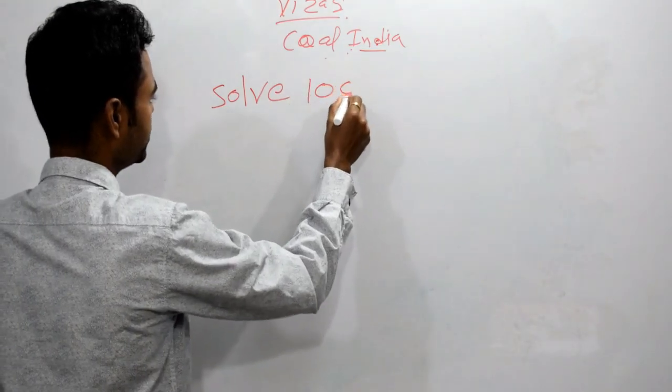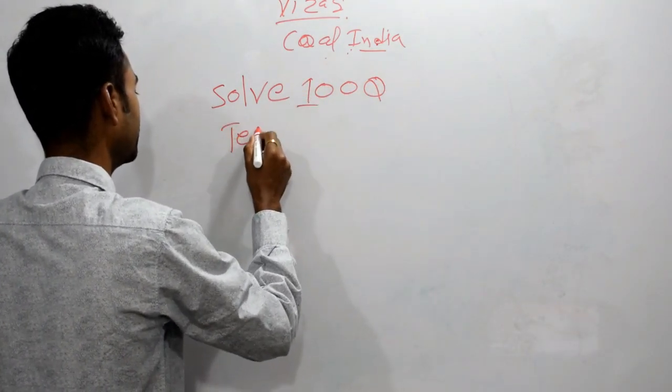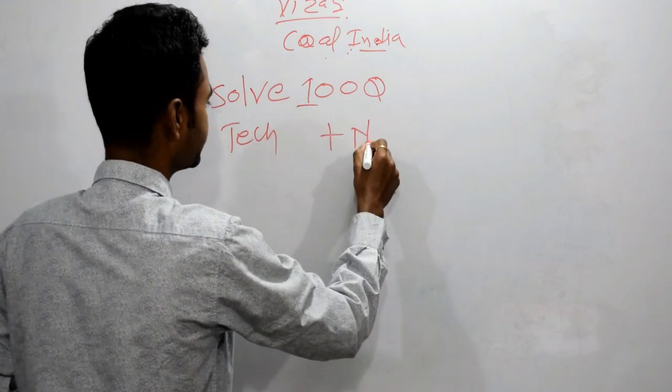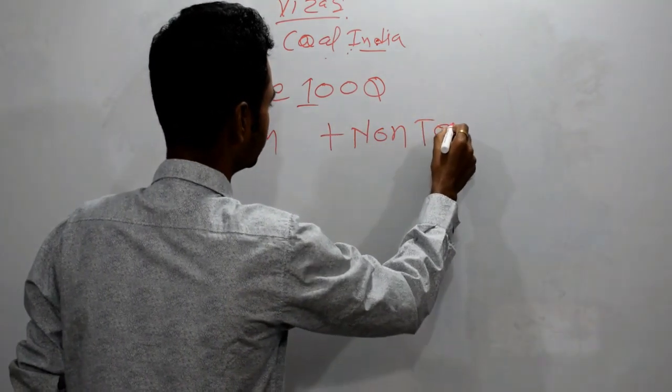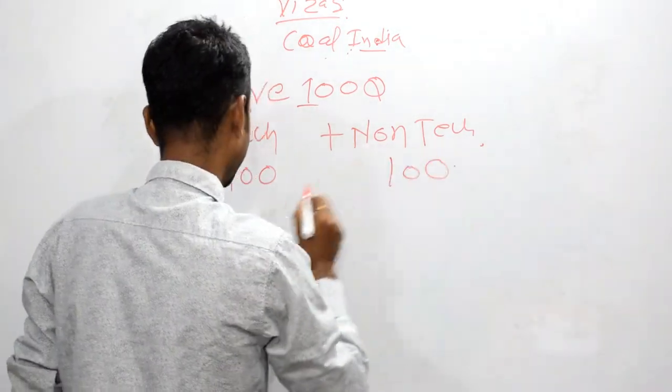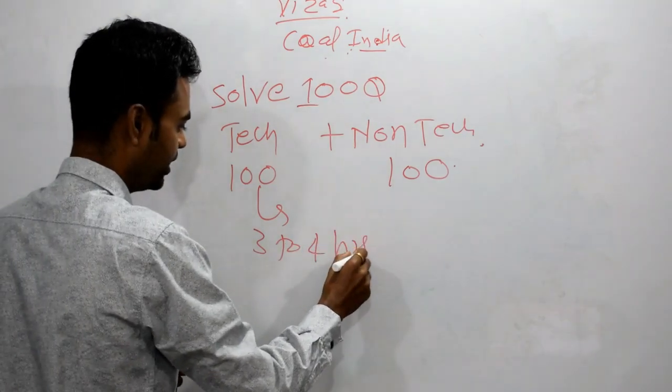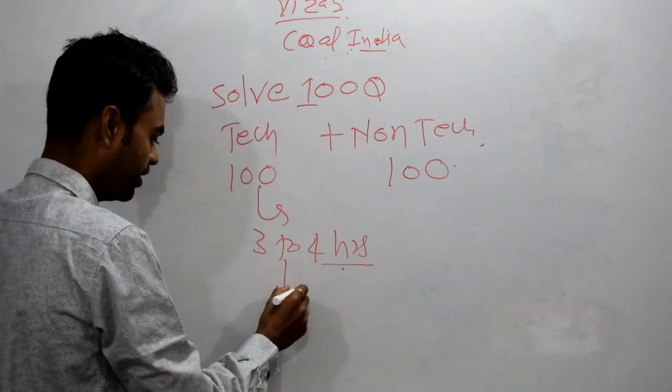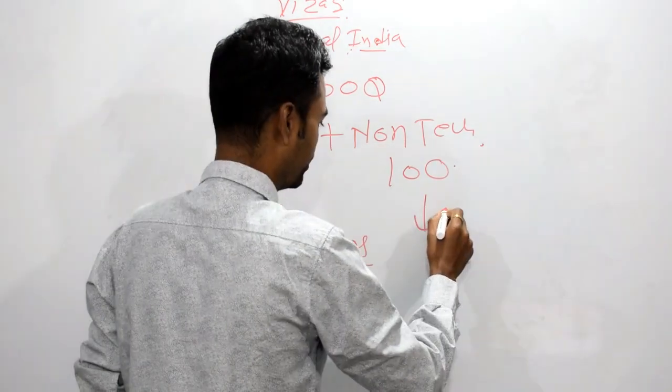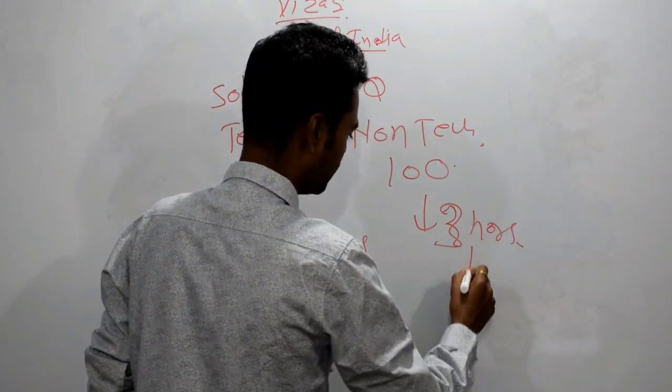First is that: Solve 100 questions every day from tech portion, 100 questions. Plus, from non-tech portion, 100 questions. Yes, 100 question tech, 100 questions non-tech. It will take around 3 to 4 hours starting, but it will keep on decreasing. Similarly, it will take around 2 to 3 hours, but it will keep decreasing.